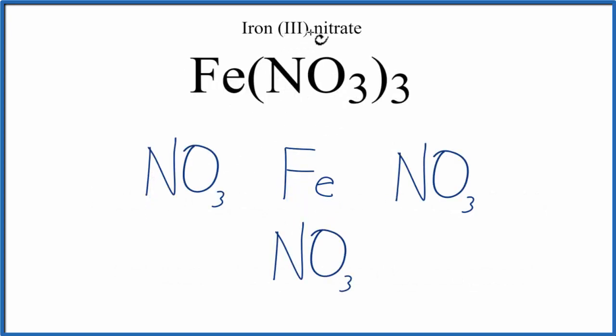When we look at the name iron(III) nitrate, the 3 means iron has a plus 3 charge. That means it's lost three electrons. So it had three valence shell electrons: one went here, that made this negative, another went here, and then the other one went to this NO₃.